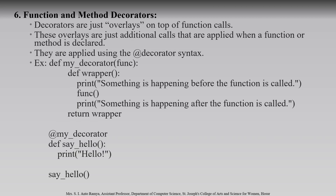Next is function and method decorators. Method decorators are like overlays placed on top of your function calls — additional calls that are used when the function is declared. You can see the example: 'def my_decorator(function)' — one thing to note is that the decorator uses the '@' symbol in front of it. Inside 'my_decorator' we create an inner function 'wrapper', inside which we print something, call another function, print another value, and return the wrapper. We create the decorator '@my_decorator' on top of 'def say_hello', which prints 'hello'. Calling 'say_hello()' starts execution and calls 'my_decorator'.